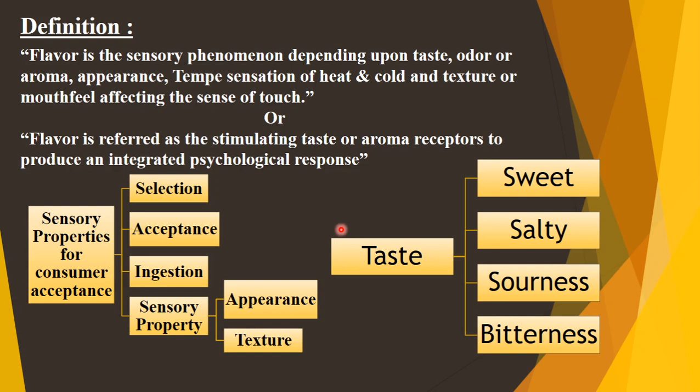Flavor is a sensation produced by a material taken in our mouth. Consumer consideration of flavor involves three main sensory properties — selection, acceptance, and rejection — which also depend on general sensory properties of appearance and texture. Tastes are divided into sweet, salty, sour, and bitterness, sensed by the corresponding taste components.